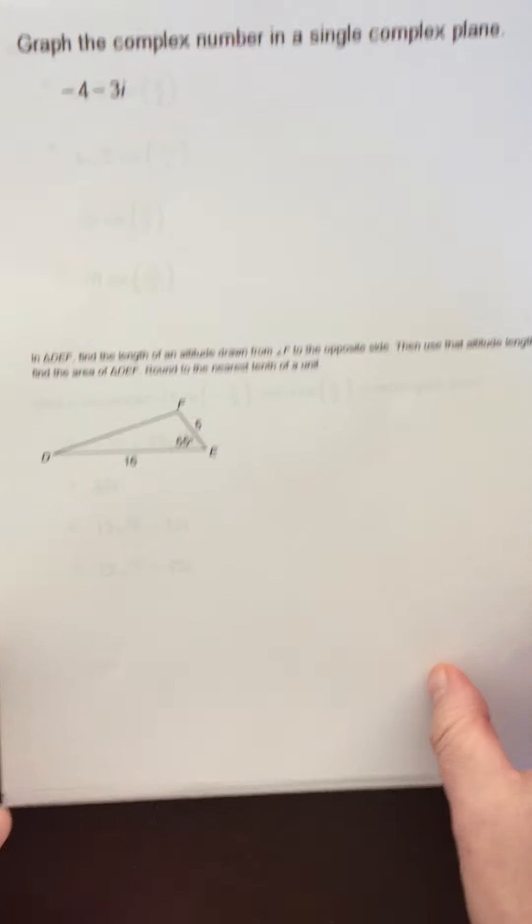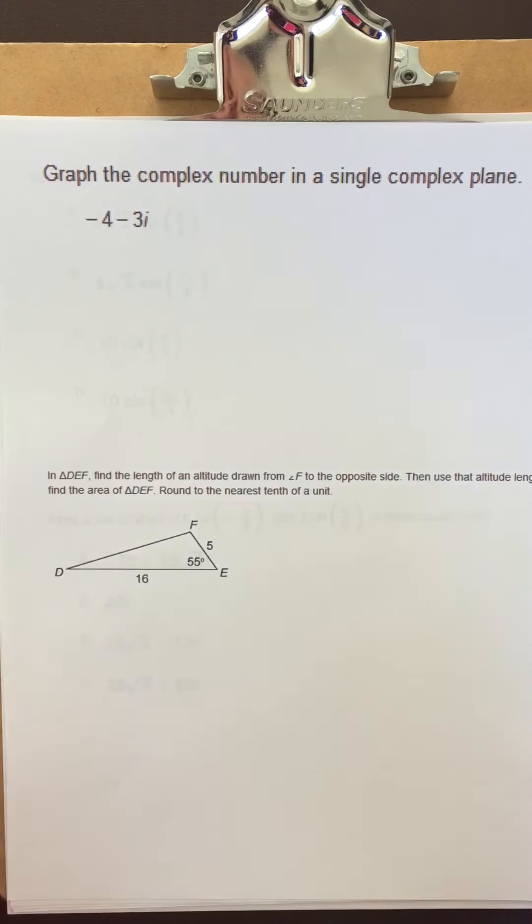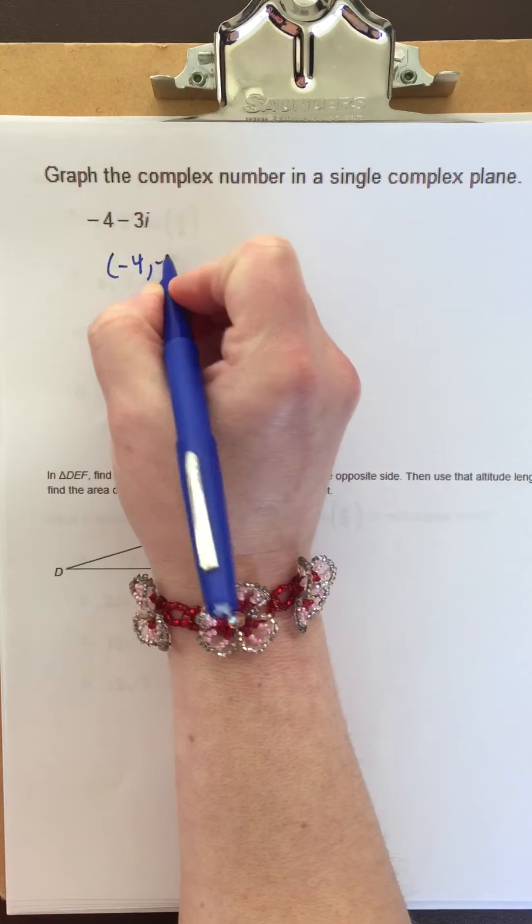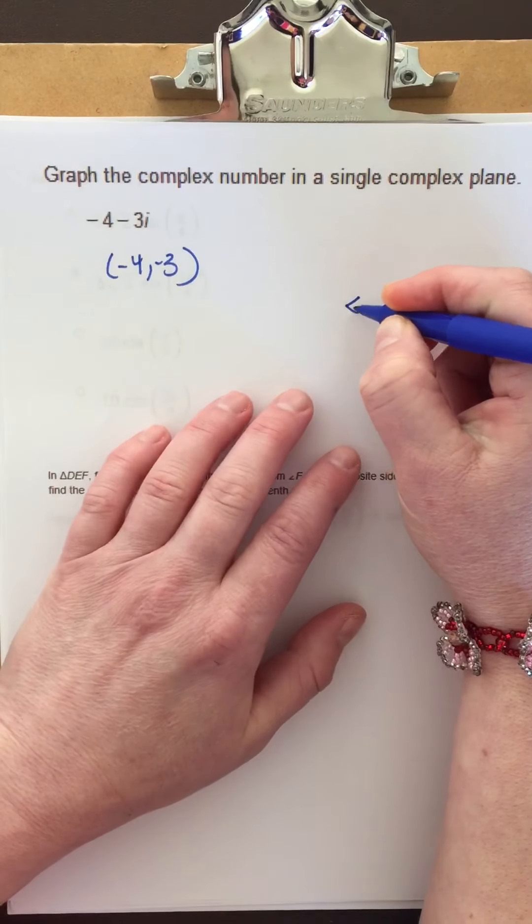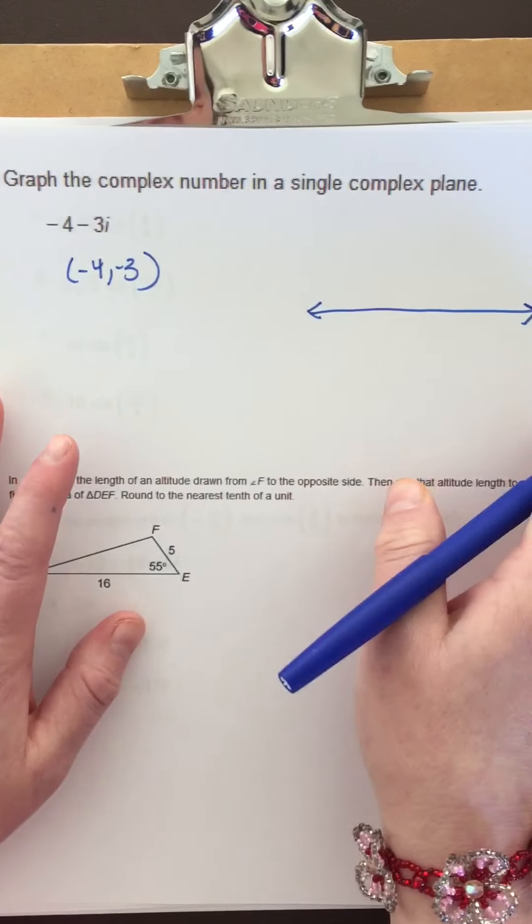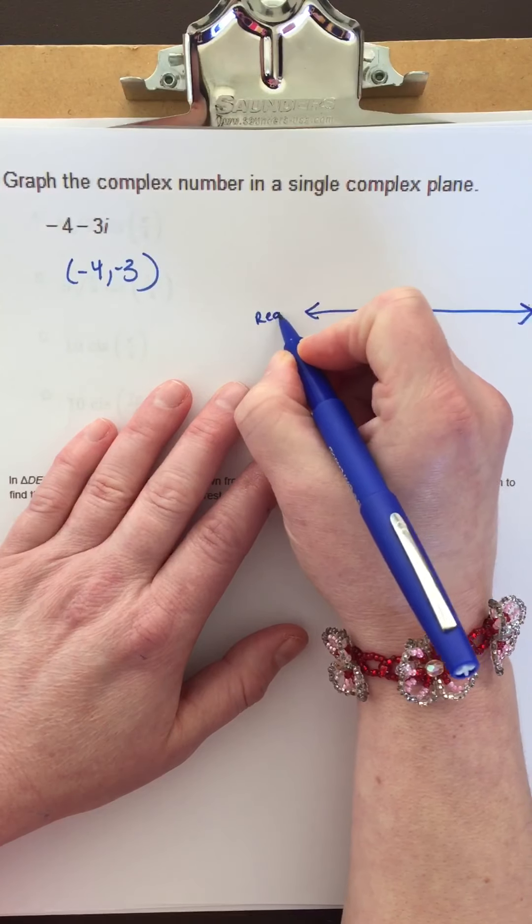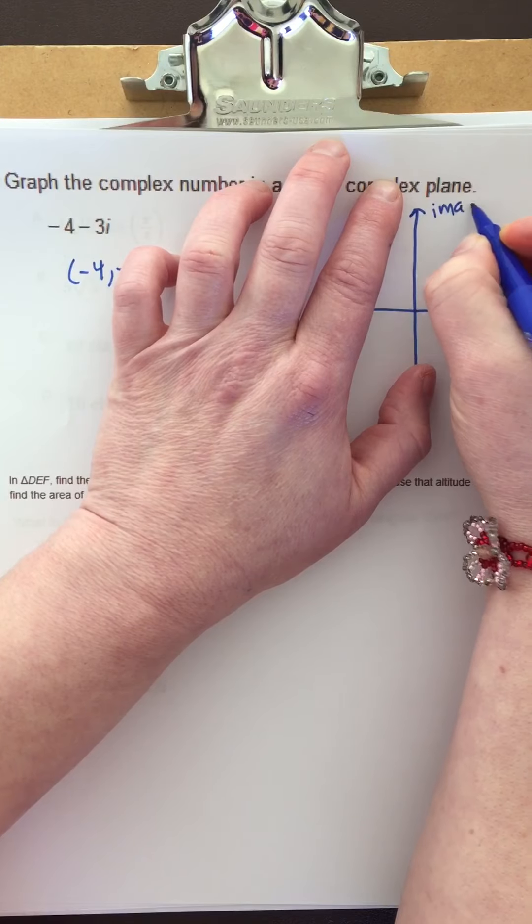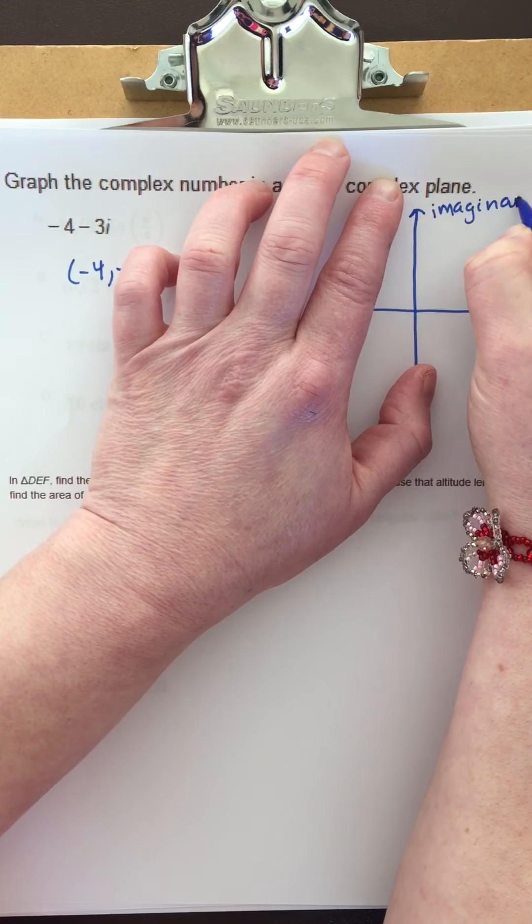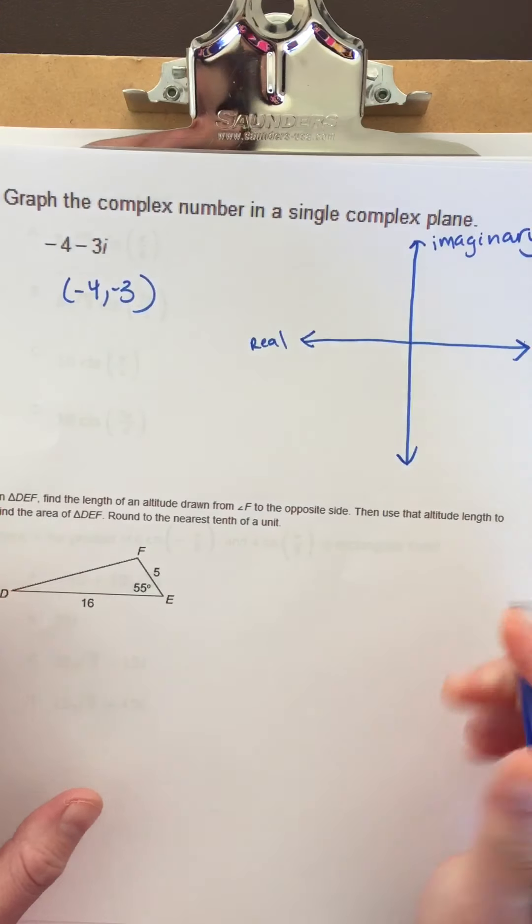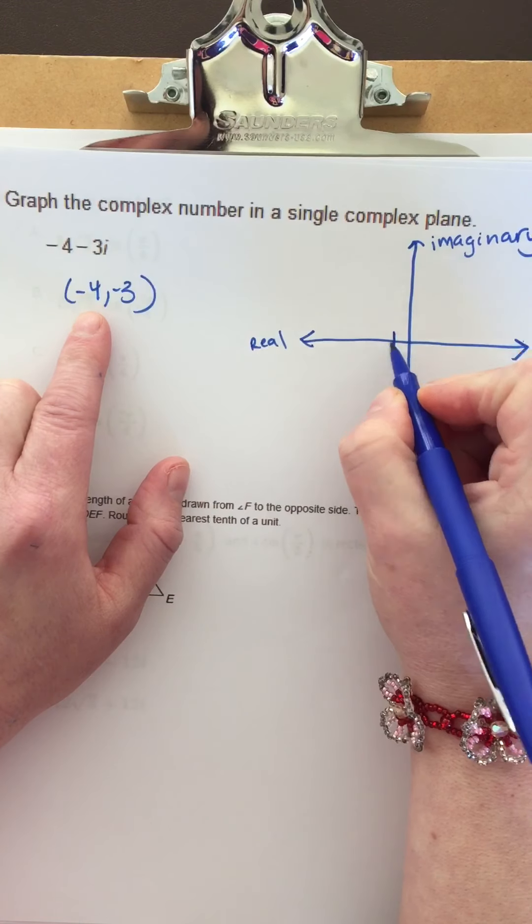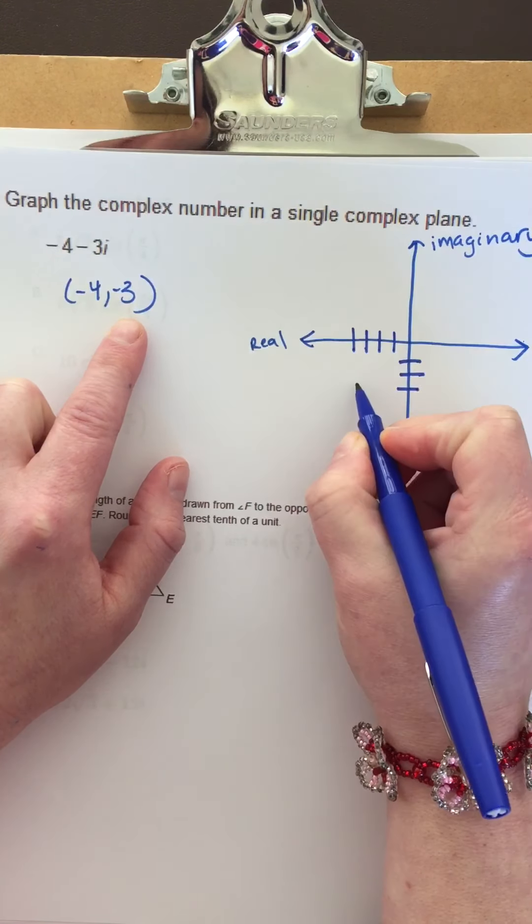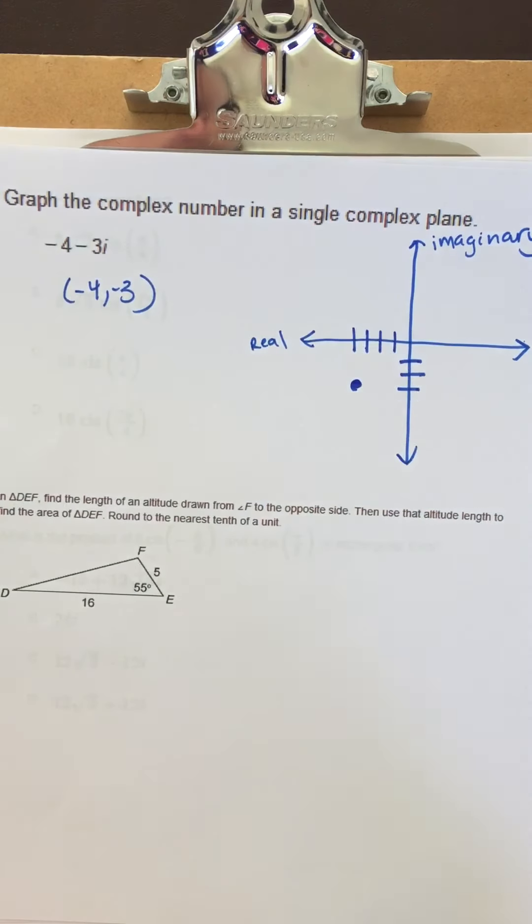For this one, all they wanted you to do was graph that point. You could think of it as negative 4, negative 3. The x-axis is the real axis, and the y-axis is the imaginary. All you would have to do is go 4 to the left and then down 3.